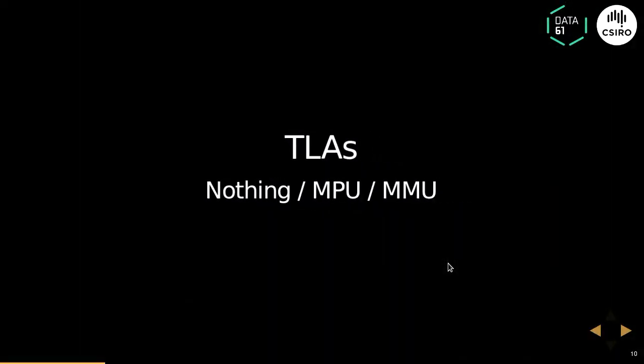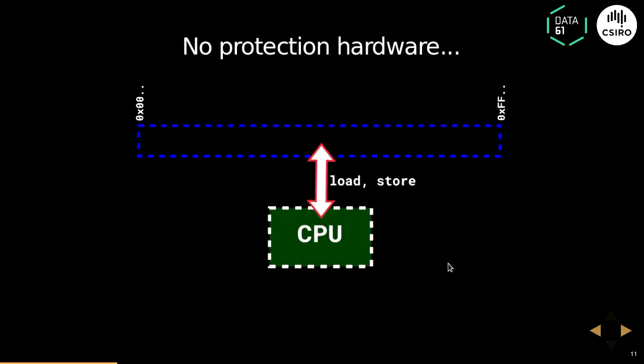So, three-letter acronyms. I'm going to be talking about memory protection units and memory management units. To give you an idea — who already knows roughly how a memory management unit works? About half the audience, so it's probably worth my time to go through this briefly. If I have no protection hardware at all on my processor, the CPU pretty much has free reign on the entire address space. Sometimes you'll get bus faults, but largely that's true.